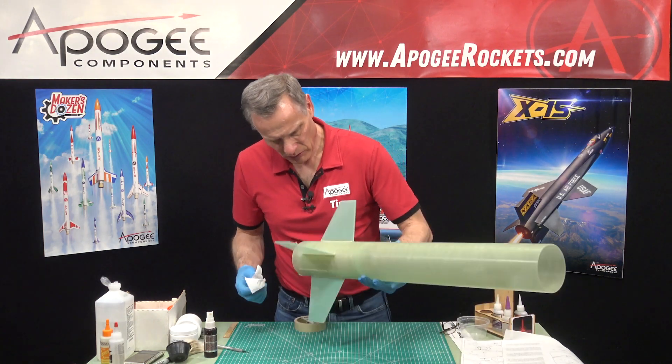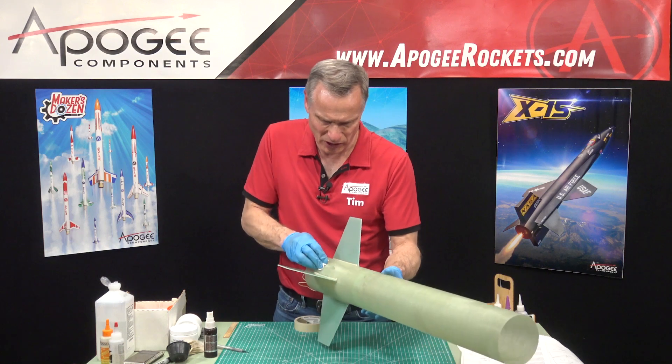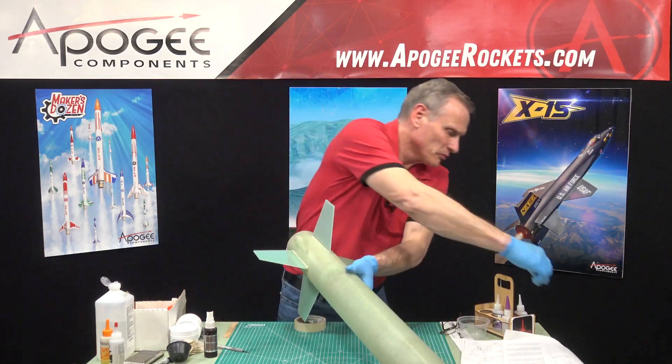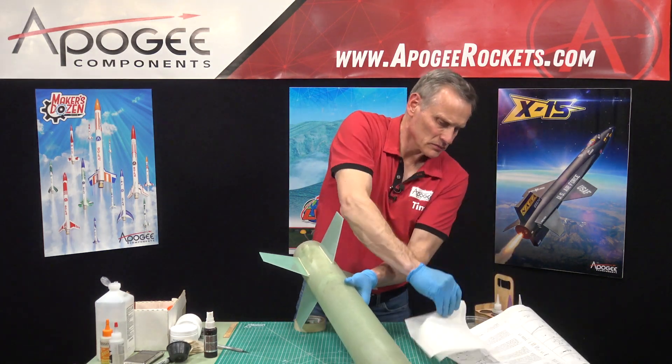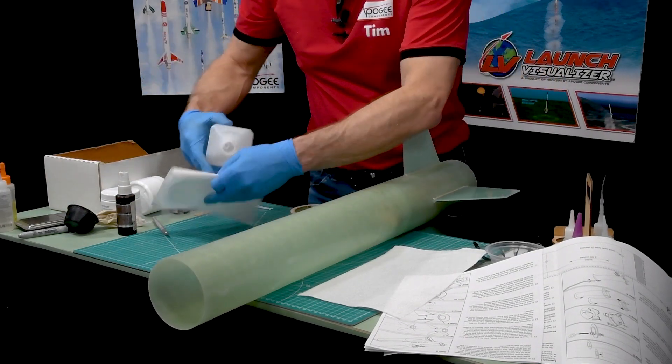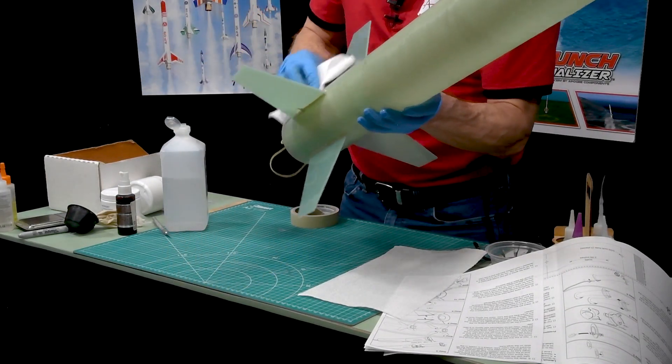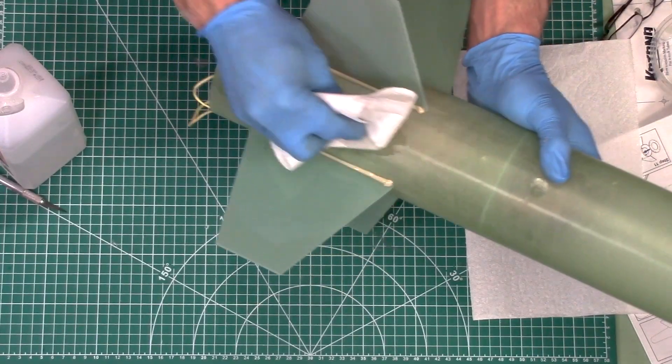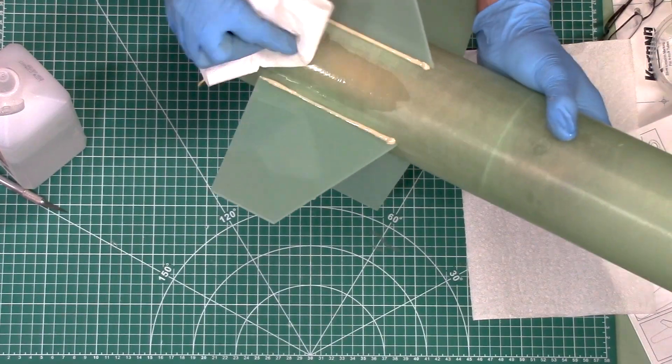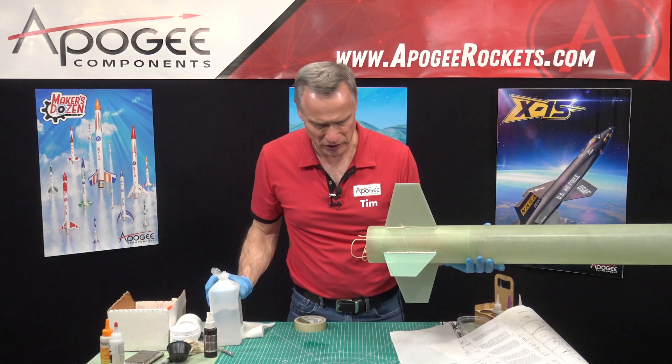Let me wipe up that mess right here. Again, paper towels and rubbing alcohol will take that off pretty easy. Now I want to smooth out these fin fillets.